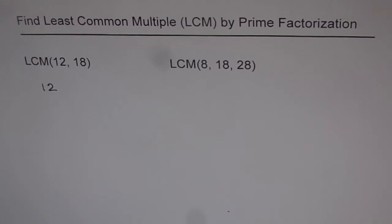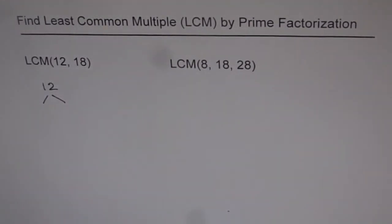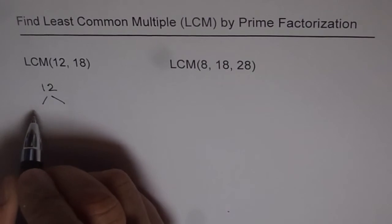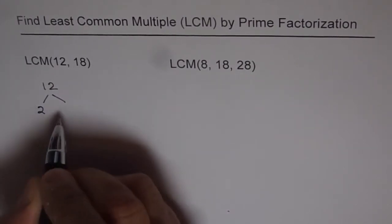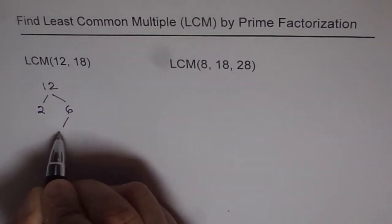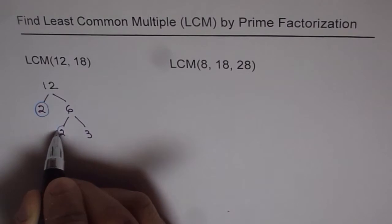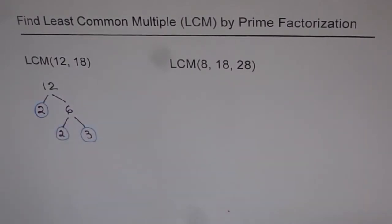12 can be... I hope you remember how to do prime factorization. If not, we have a video on that which you can look into. Here, 12, you can divide 12 as a factor of 2, and 2 times 6 is 12. So, we get 2 times 6, and 6 could be written as 2 times 3. Now, as you see, we have got prime numbers now. These are all prime numbers. We can circle them.